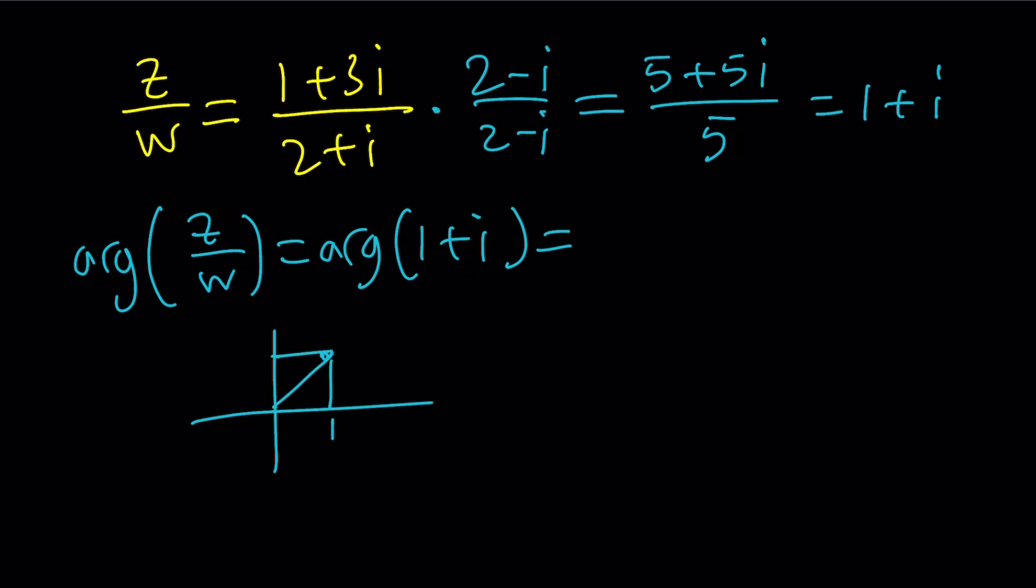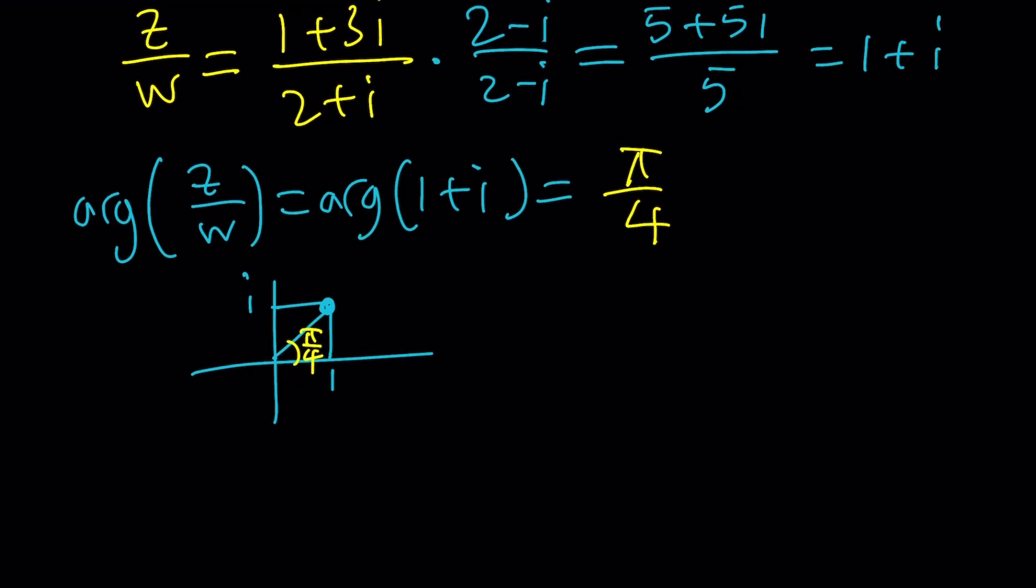Yes, this is 1. This is i. 1 plus i is represented by this point. And this angle is pi over 4. That's why we get a unique angle because this method is obviously better. Let me know what you think, though. So from here, we're going to get the argument of 1 plus i is pi over 4. Therefore, tan inverse 3 minus tan inverse 1 half is going to be pi over 4 one more time.